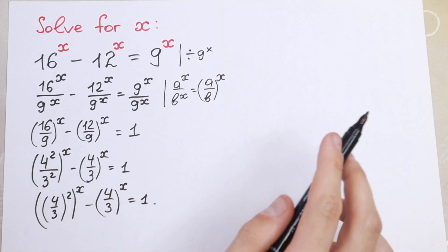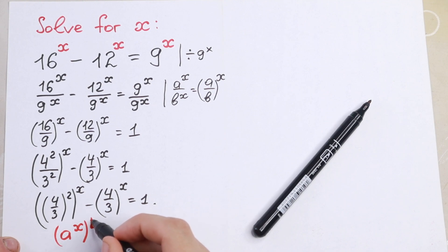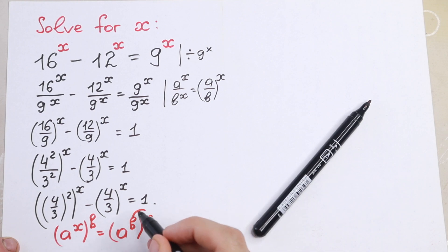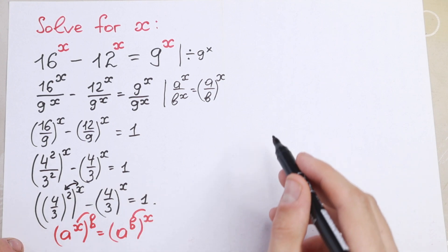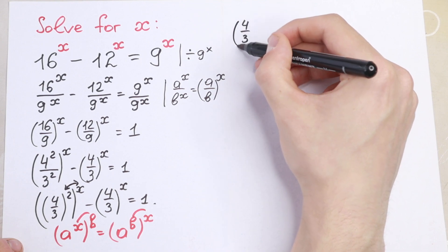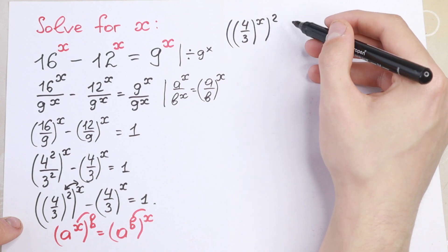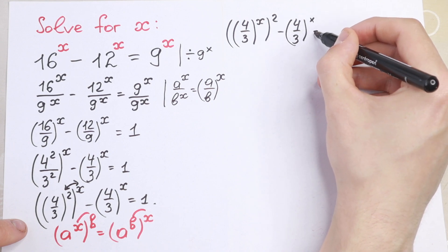Now I want to show you the rule of interchange — a really good rule we need here. If we have a to the power x, raised to the power b, we can write it as a to the power b, raised to the power x. So we can swap these powers. In our case we swap x and 2, giving us 4 over 3 to the power x, all raised to the second power, minus 4 over 3 to the power x, equal to 1.